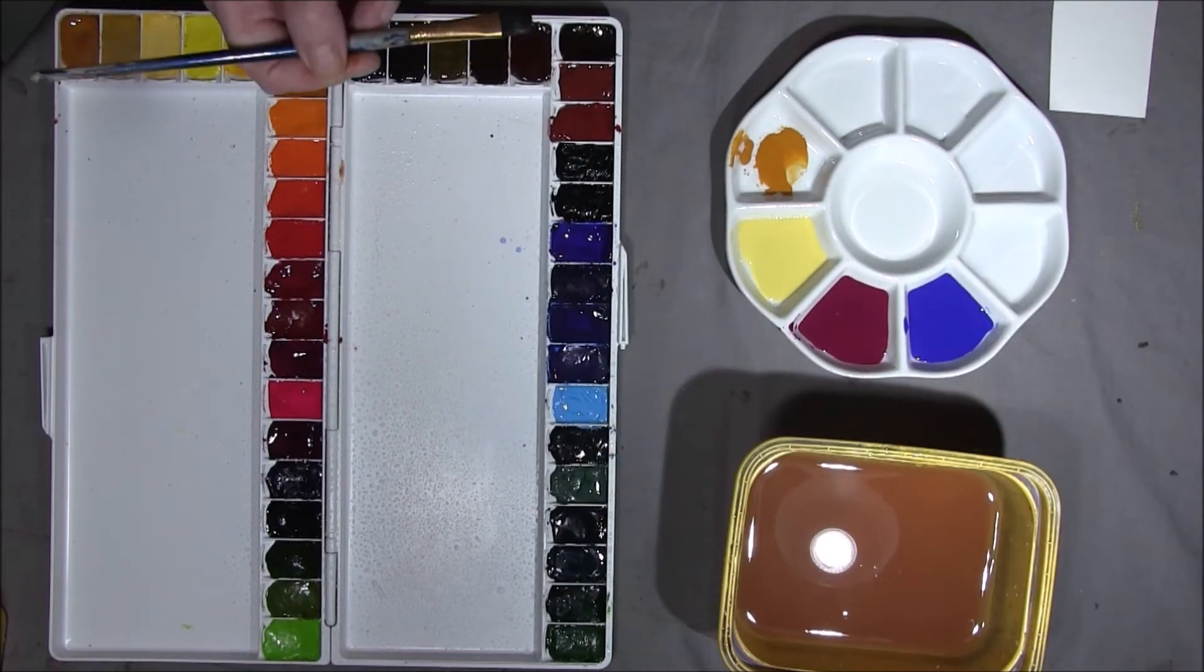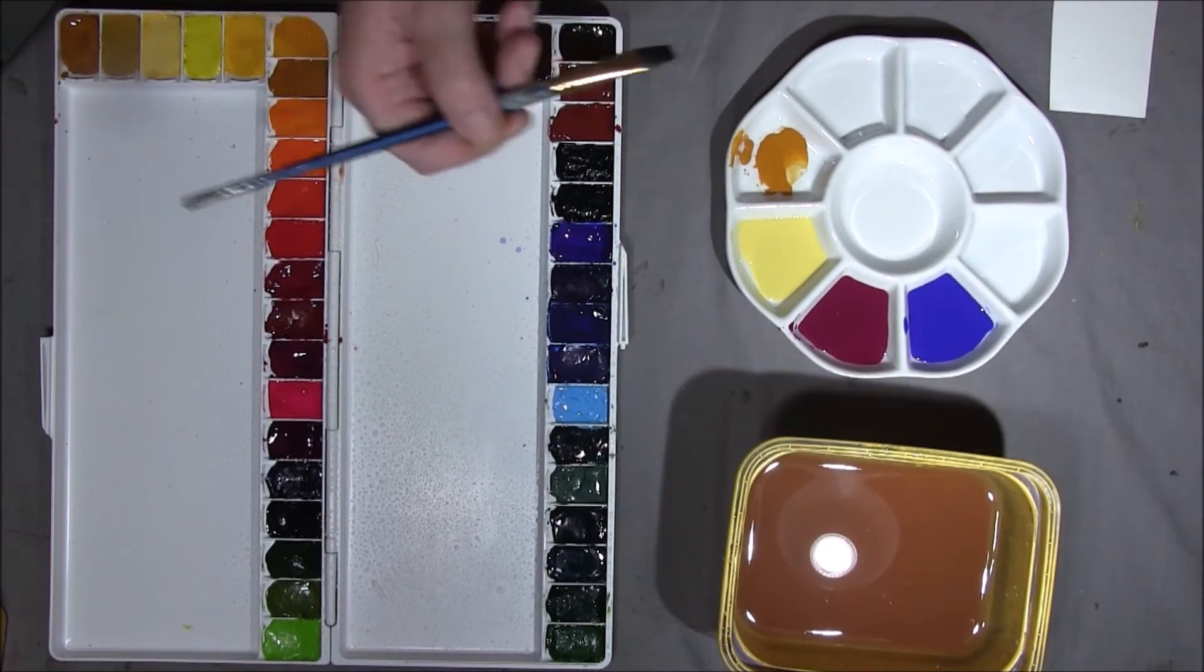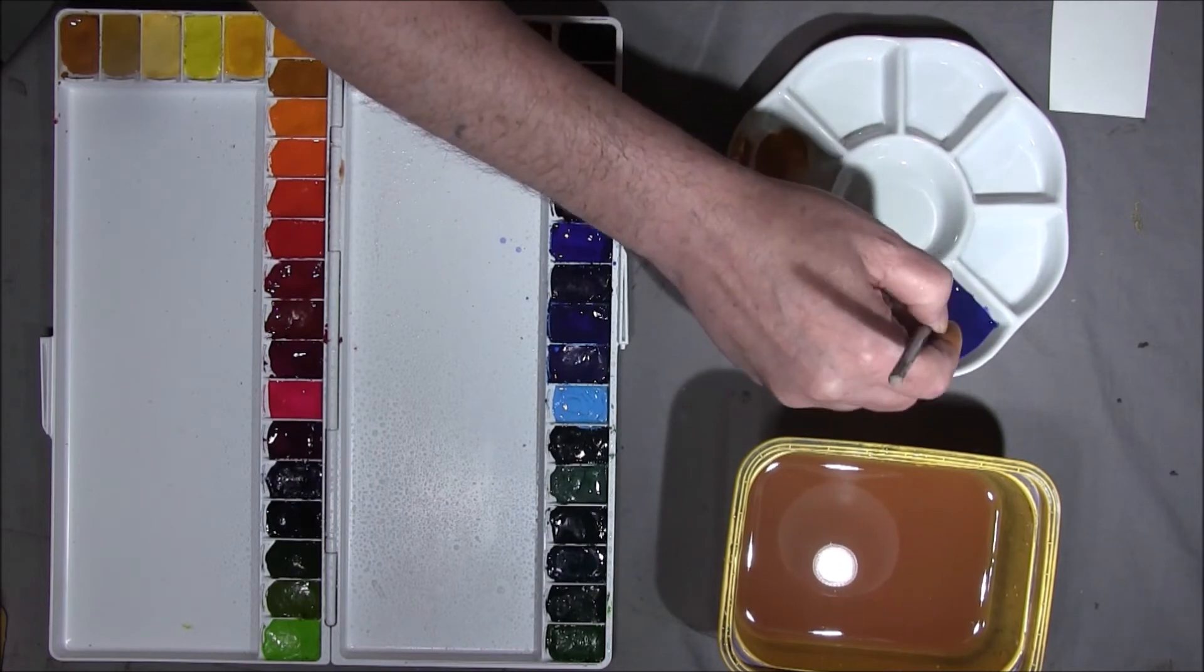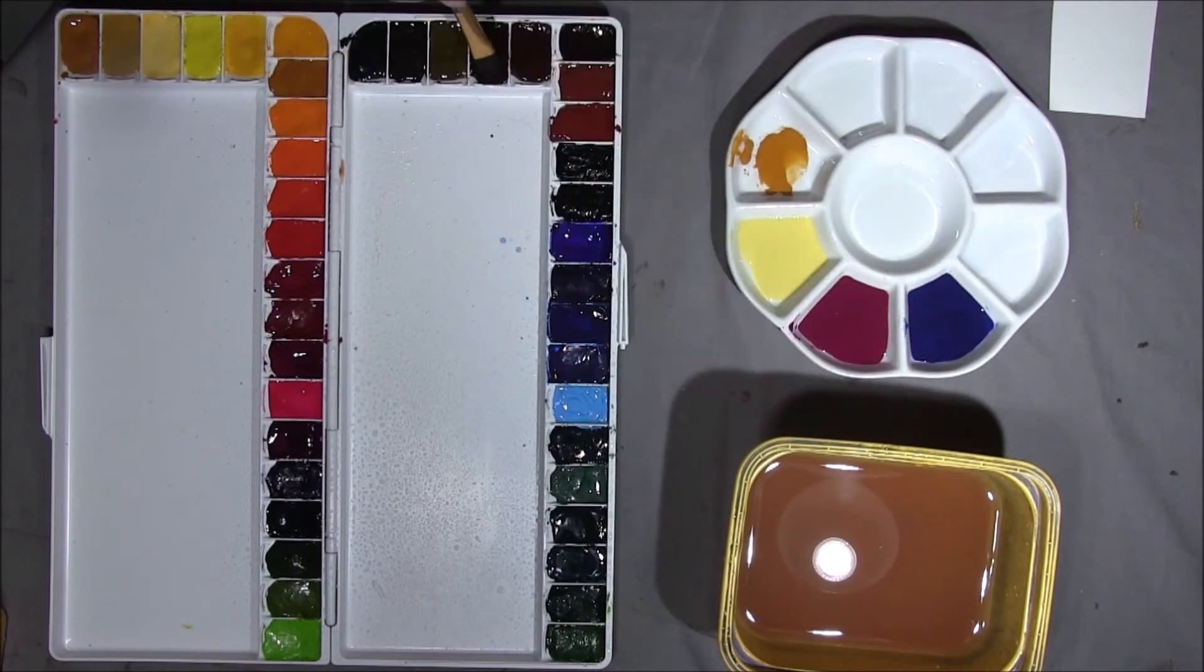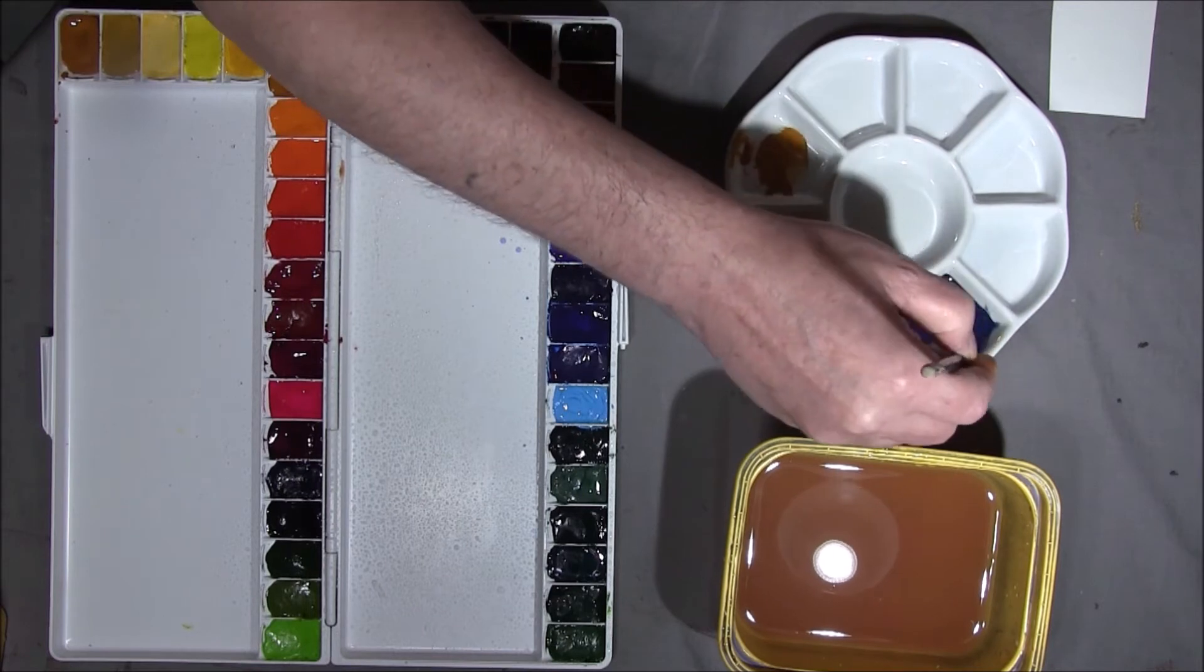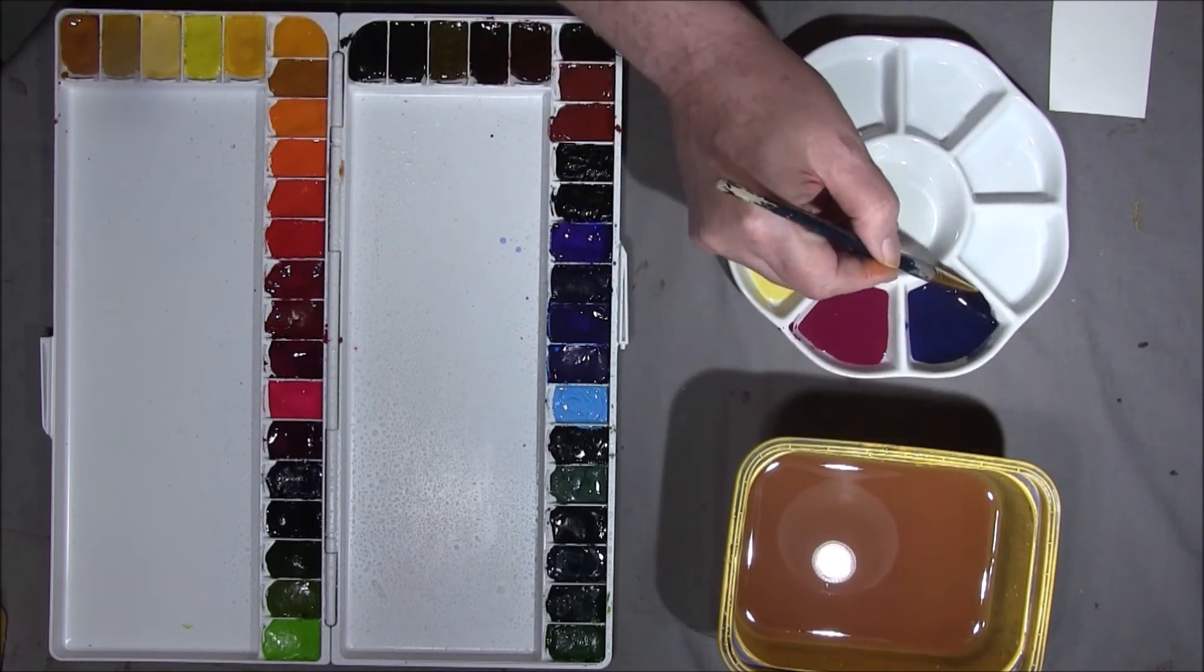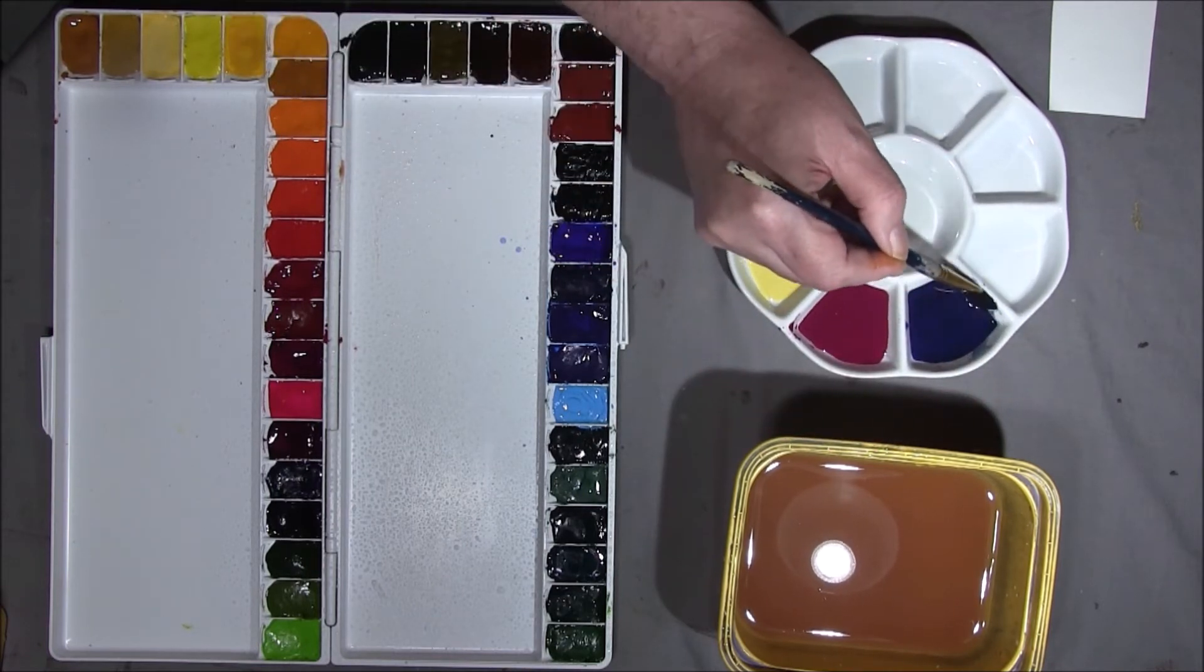Burnt umber, just to grey it. I'm looking at the color on the side of the dish—do you see that there?